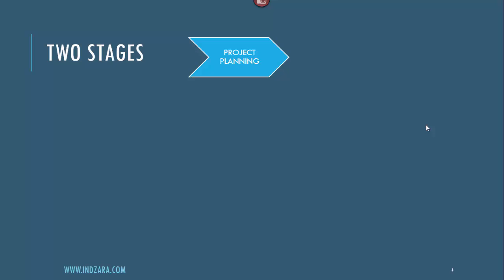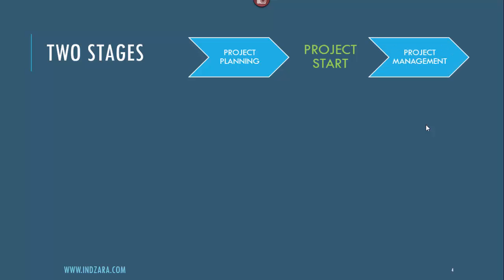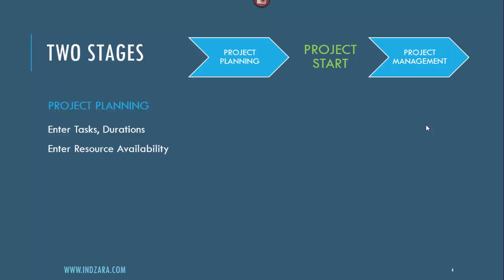There are two stages in this project management approach. The first is the planning stage, which happens before the project begins. In this stage you look into the number of tasks, what they are, how long each will take, who the resources are, what their availabilities are, and then you assign tasks to specific resources. You then evaluate your plan: when will the project complete, how long will it take, how much will it cost — and you make changes to optimize toward your goals.